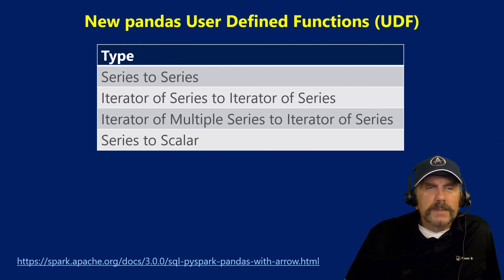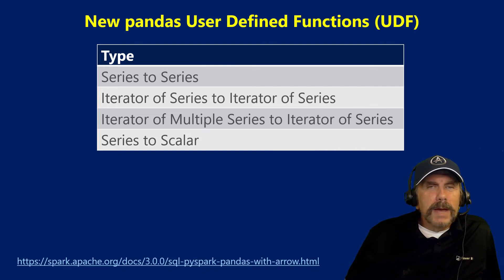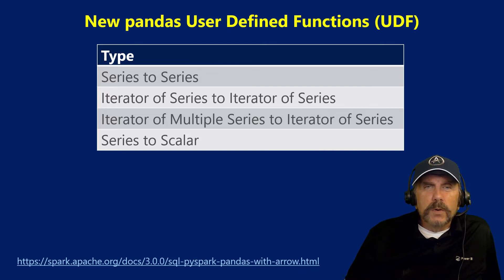We can see there are four different types that we're talking about here. The biggest difference in the formatting is that a recent Python language addition is type hints. As we know, Python is a dynamic data typing language, and that can make it problematic when you create functions and pass back values, because you don't know what the data types are and you never specify them. Type hints allow you to specify the type of input parameters and output parameters for functions.